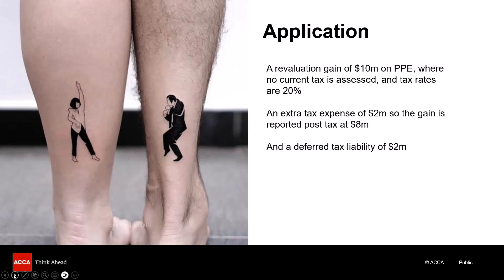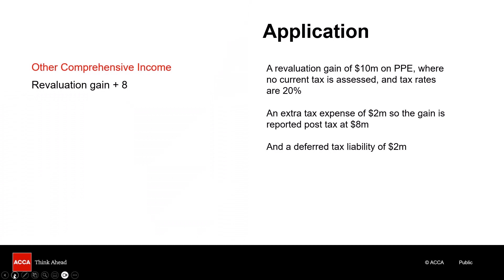Rather than thinking purely in terms of debits and credits, it's useful to think about how this affects the overall financial statements. In other comprehensive income you'll have a revaluation gain of a net figure of 8. In your statement of financial position, because of the revaluation, PPE has gone up by 10. Anything going through other comprehensive income goes through other components of equity — so the net figure there is 8 — and your deferred tax liability, a non-current liability, increases by 2.